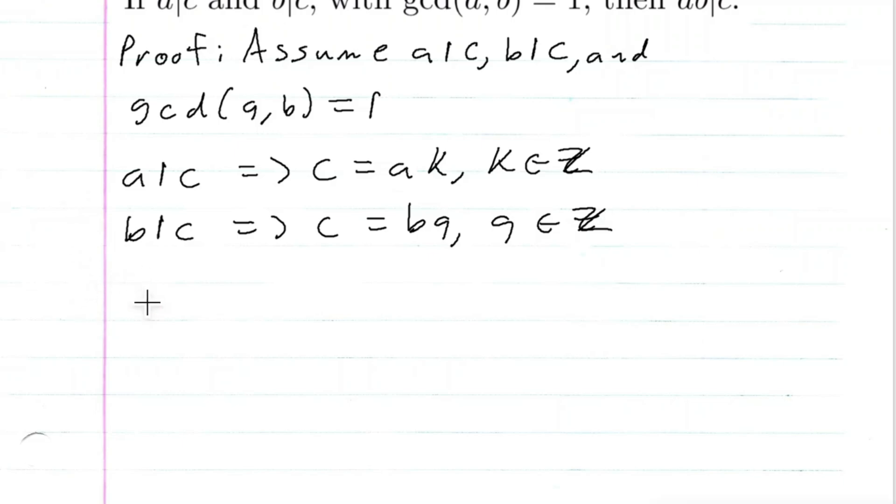And of course, the GCD of A and B equal to one implies that AX plus BY is equal to one, where X and Y are integers, right? We can write the GCD of A and B as a linear combination, and that linear combination is equal to one.